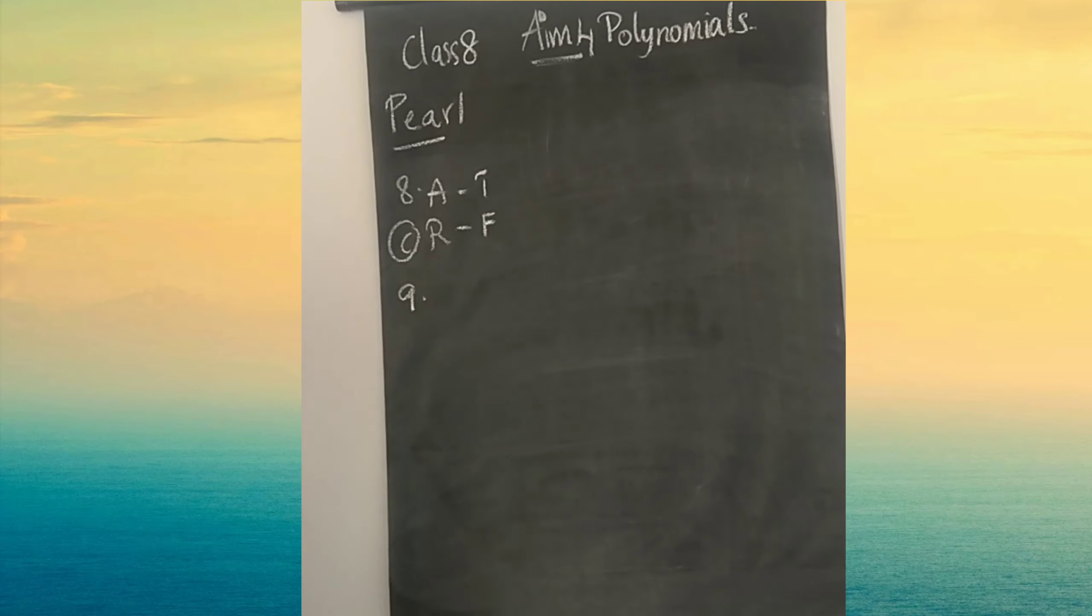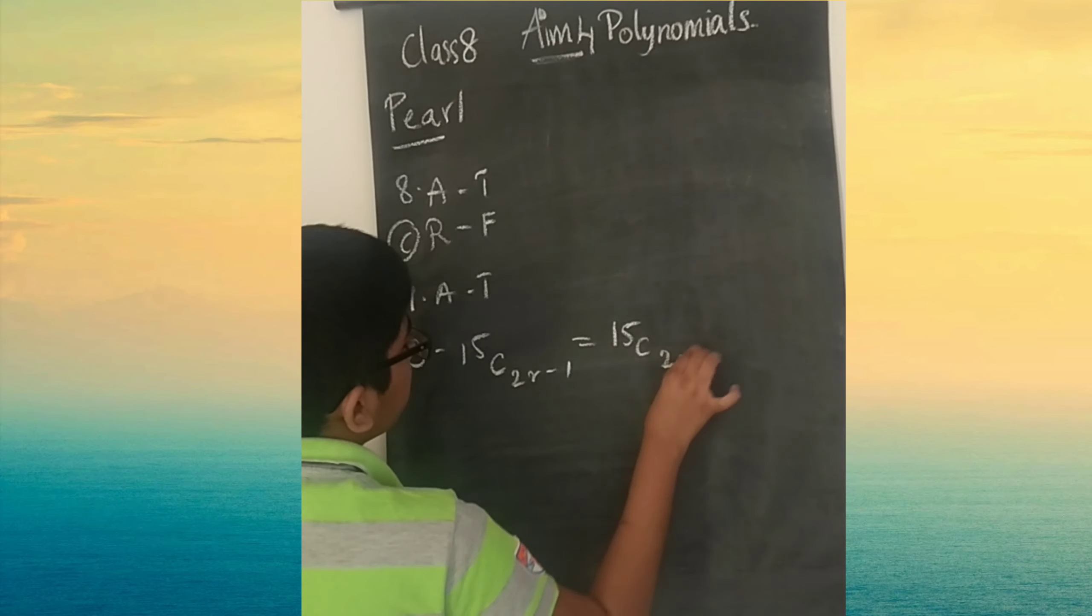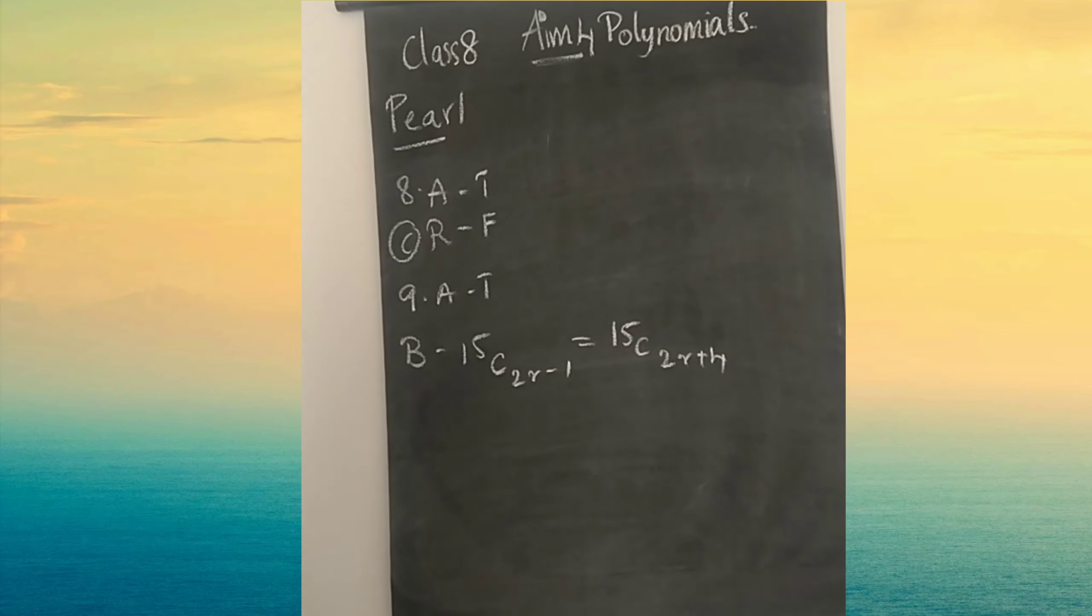Ninth one, statement type question. First statement A: if n factorial is 24 then n is 4. That is correct. So statement A is true. Statement B: if 15C 2R minus 1 equals 15C 2R plus 4 then R value is 3. We have to verify whether it is correct or wrong. I will solve statement B now.